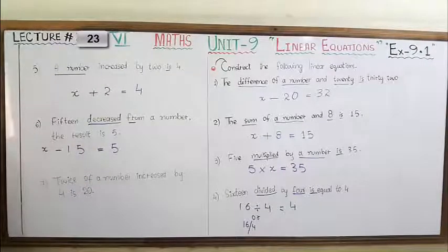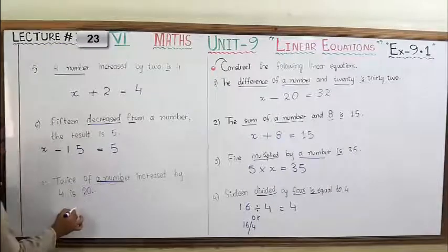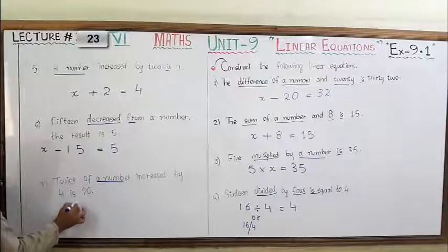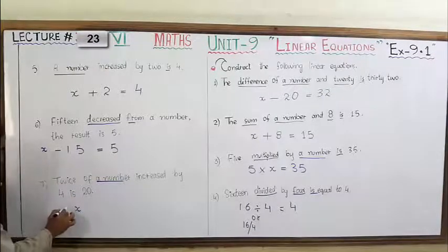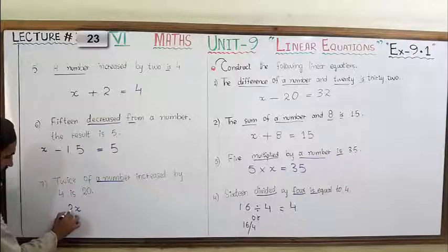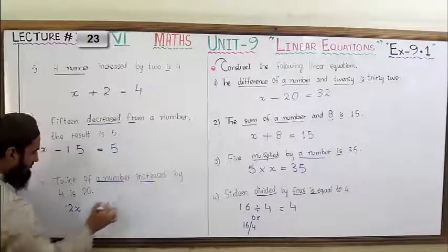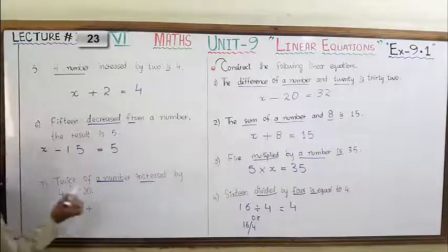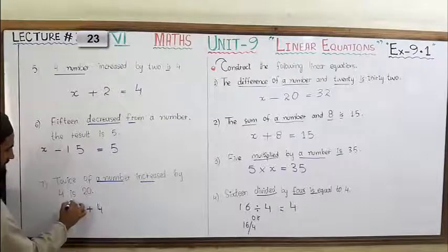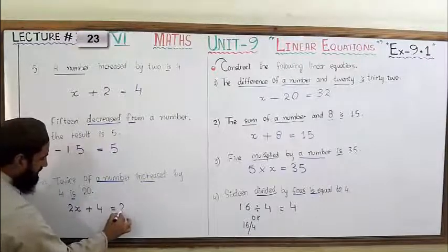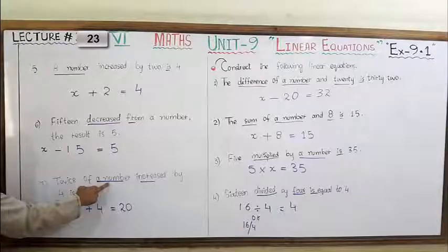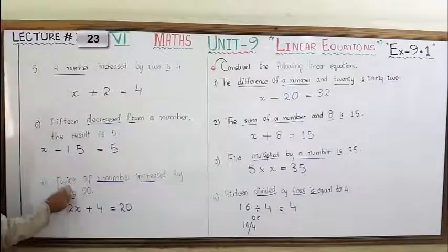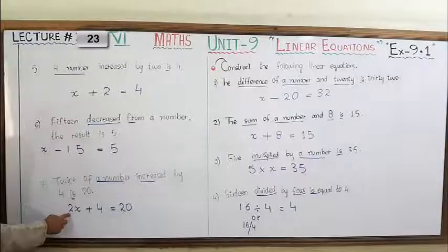Saatwa statement: 'Twice of a number increased by 4 is 20.' Number kya hai? Humein maloom nahi, to usse X ke zariye show kar diya. Twice mean hota hai double — to twice of a number yani yeh variable do baar hai, yaani 2X. 'Increased by 4' — plus ki sign likhenge, by four — yahan humne 4 likhe. 'Is' — equal to ki sign. 'And last mein 20.' Is tareeqe se yeh equation construct ho gayi: 2X + 4 = 20.